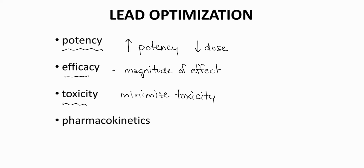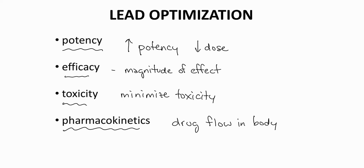A fourth property is called pharmacokinetics. Pharmacokinetics addresses how a drug flows through the body — a drug has to enter the body and leave the body, and pharmacokinetics addresses this idea. One of the outcomes of pharmacokinetics is something like the drug's half-life. Lead optimization requires balancing these different properties with many likely trade-offs. For example, reducing toxicity may require a slight loss in potency.